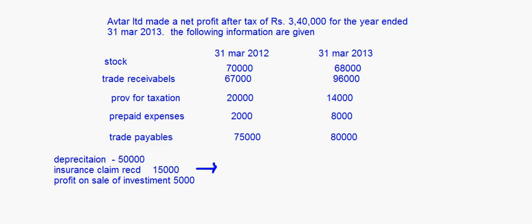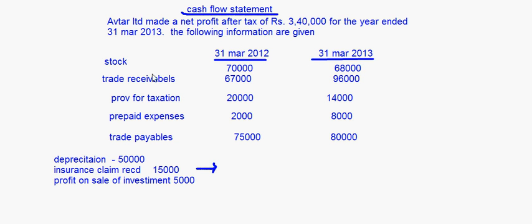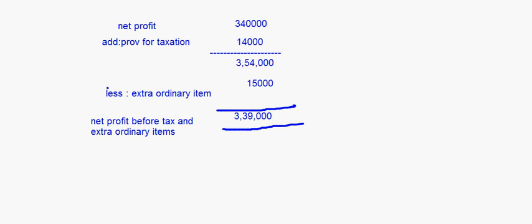Now cash flow statements - let's take up this question. This was the same question taken up in the previous session. Aftar Limited made a net profit after tax of 3,40,000 for the year ended 31st March 2013. The following information was given for 31st March 2012 and 31st March 2013: stock, trade receivables, provision for taxation, prepaid expenses, trade payables. Additional information given was depreciation of 50,000, insurance claim receipt 15,000, profit on sale of investment 5,000.